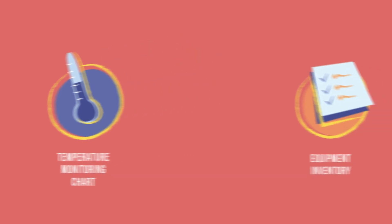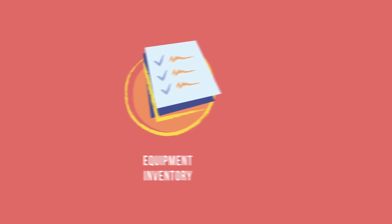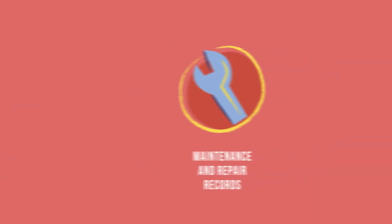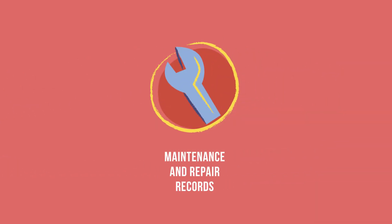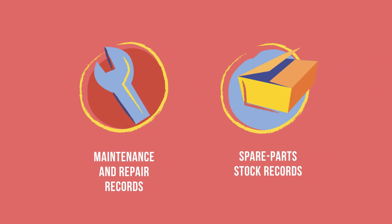Every level should keep an ongoing inventory of all equipment used to store or transport vaccines and their status. Every level should also monitor whether equipment is functional, when it is maintained or repaired, and which spare parts are in stock.